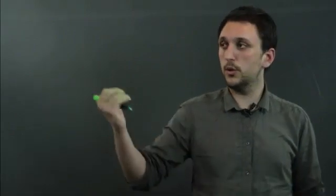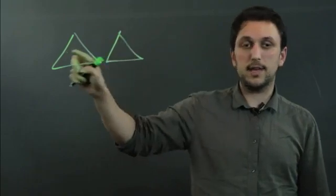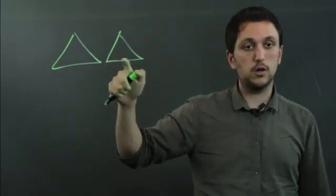Now two triangles are said to be congruent when they are the exact same size and have the exact same angles. So pretend these two are drawn to scale.